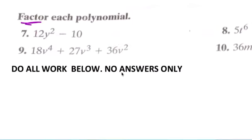When you're factoring, if it says factoring, you can divide all these by 2. So your answer for number 7 is 2, you factor out. What's left is 6y squared minus 5.